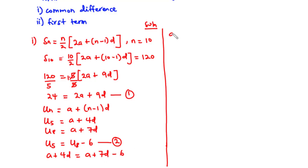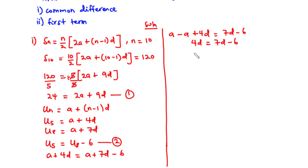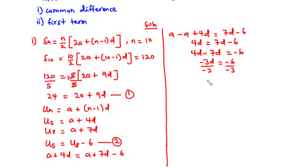So A minus A plus 4D equals 7D minus 6. A minus A is 0, so 4D equals 7D minus 6. Transposing 7D to the left-hand side: 4D minus 7D equals negative 6. Now 4D minus 7D is negative 3D, and that equals negative 6. We divide through by negative 3, and then we have D equals 2. So the common difference is 2.